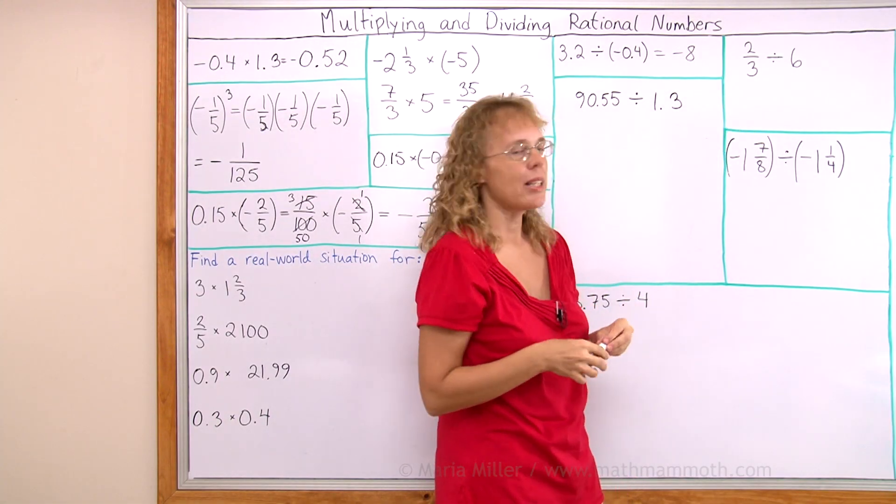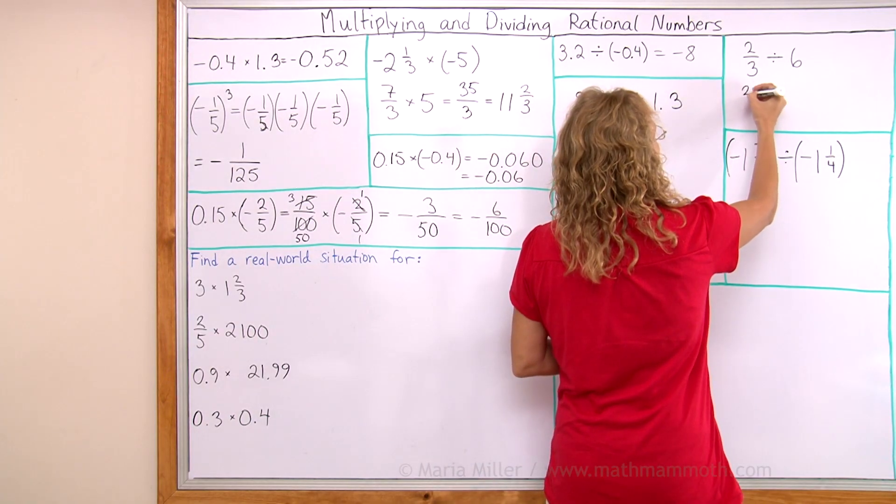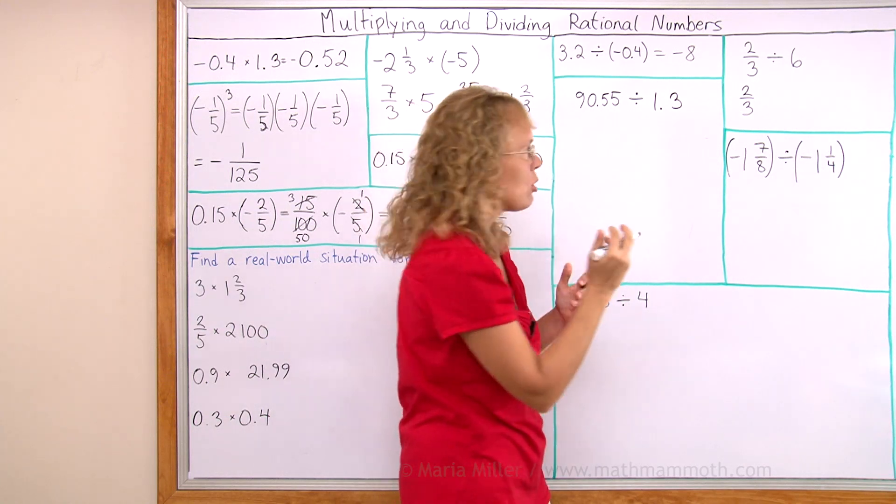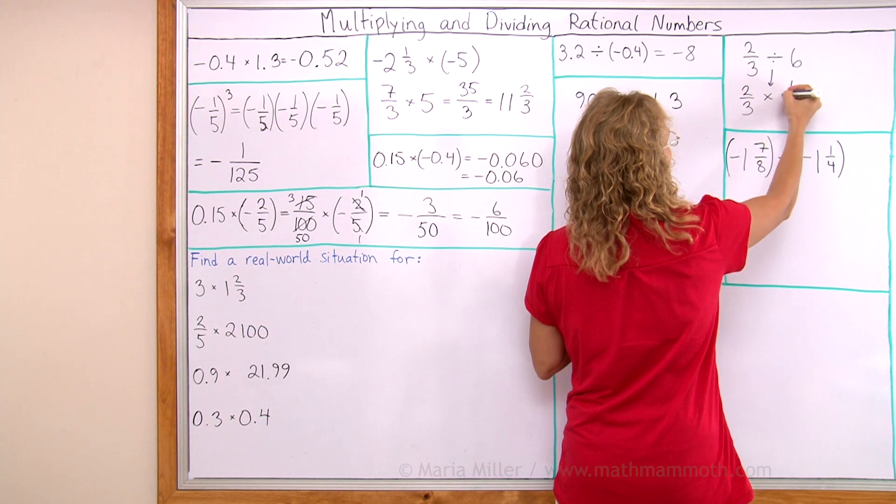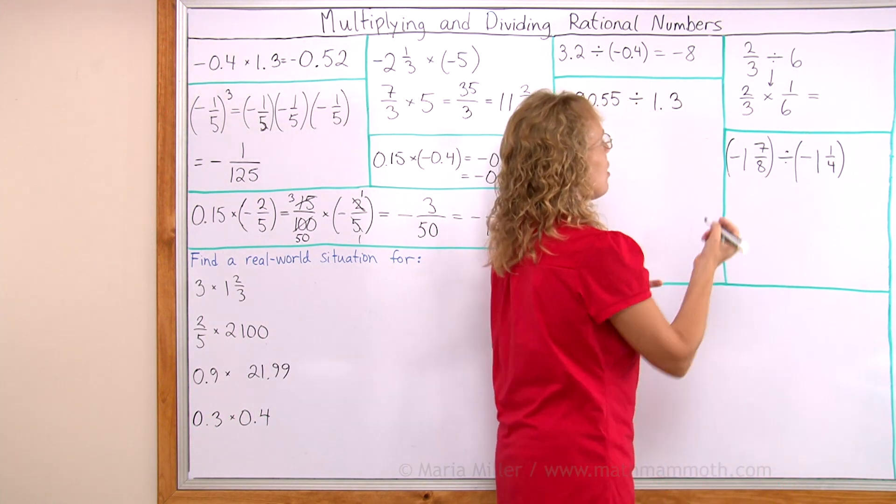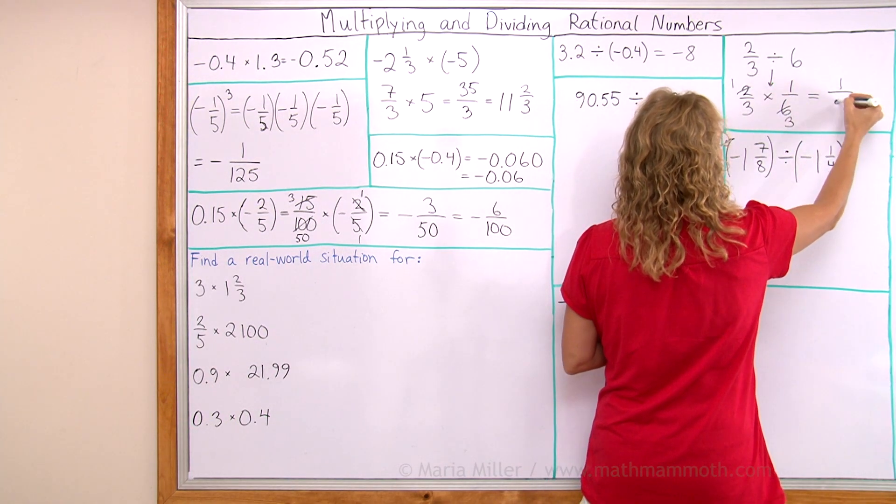This one here, 2 thirds divided by 6, is a simple fraction division. 2 thirds. You remember how to divide fractions? You need to change the division into a multiplication and 6 into its reciprocal, like that. And then it's easy to multiply. I can simplify before I multiply as 1 and 3, so I get just 1 ninth.